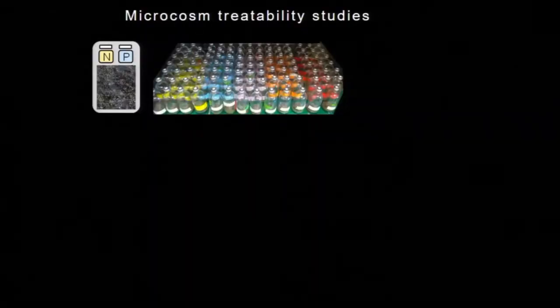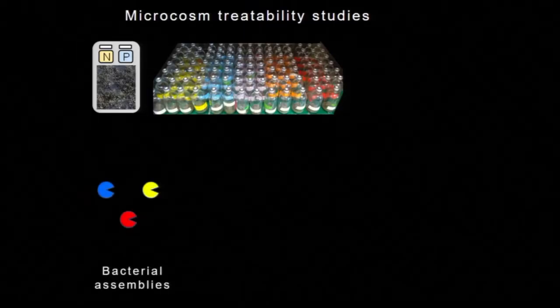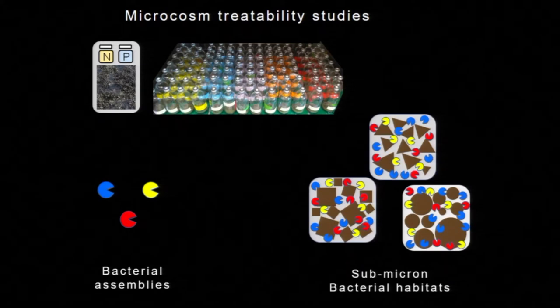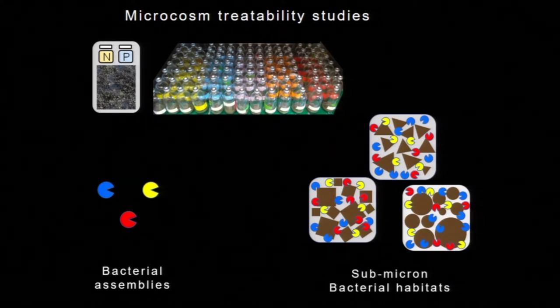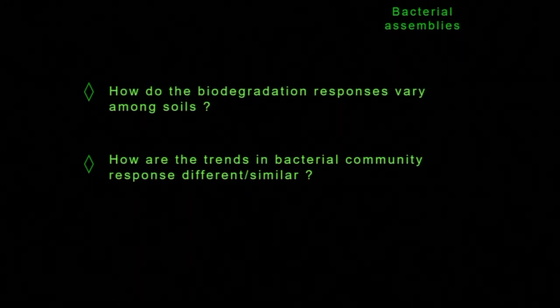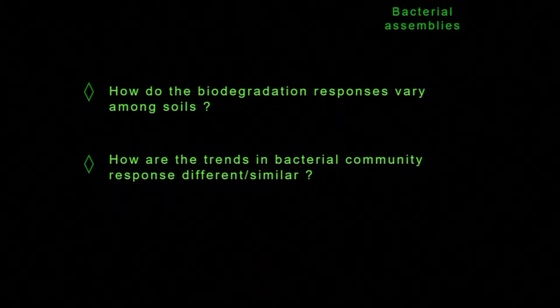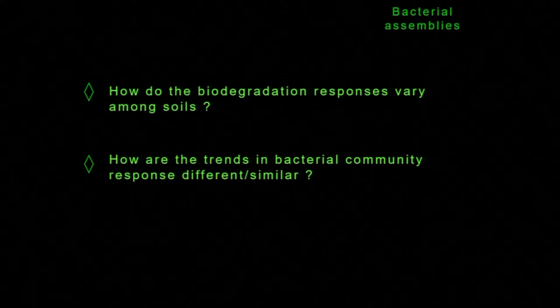In the lab, I start by microcosm experiments. You remember when I said you add nitrogen and phosphorus to clean up the soils — we are doing exactly the same thing, only in small glass bottles. From these reactions, I do two types of analysis. I do bacterial community analysis, broadly trying to answer who are the major hydrocarbon degraders and how these bacteria are distributed between the soils. In parallel, we also want to measure the bioaccessible and inaccessible scenarios — we want to measure the submicron habitats from these soils.